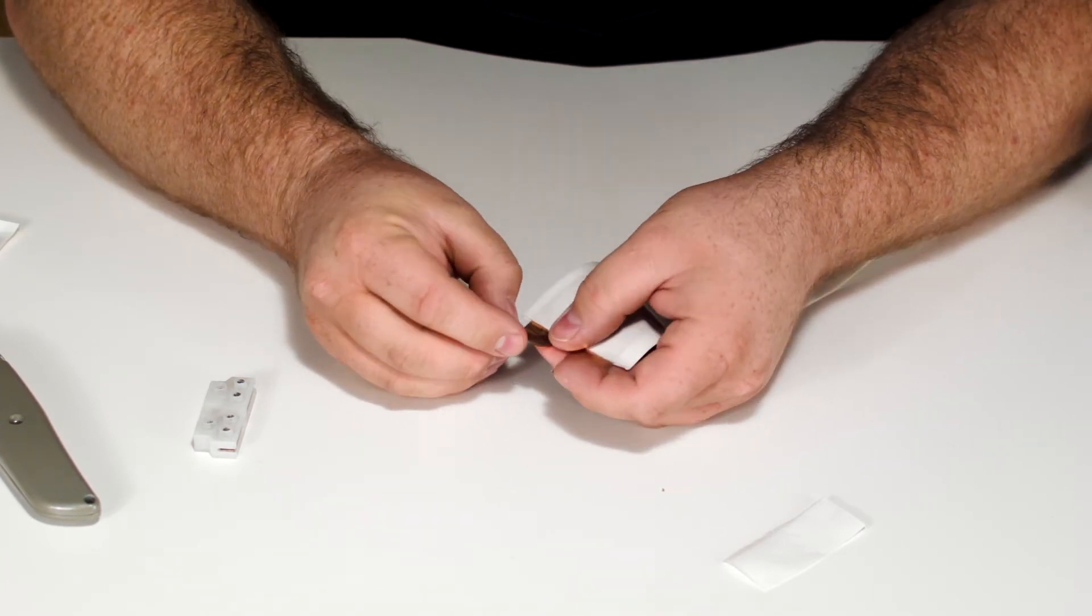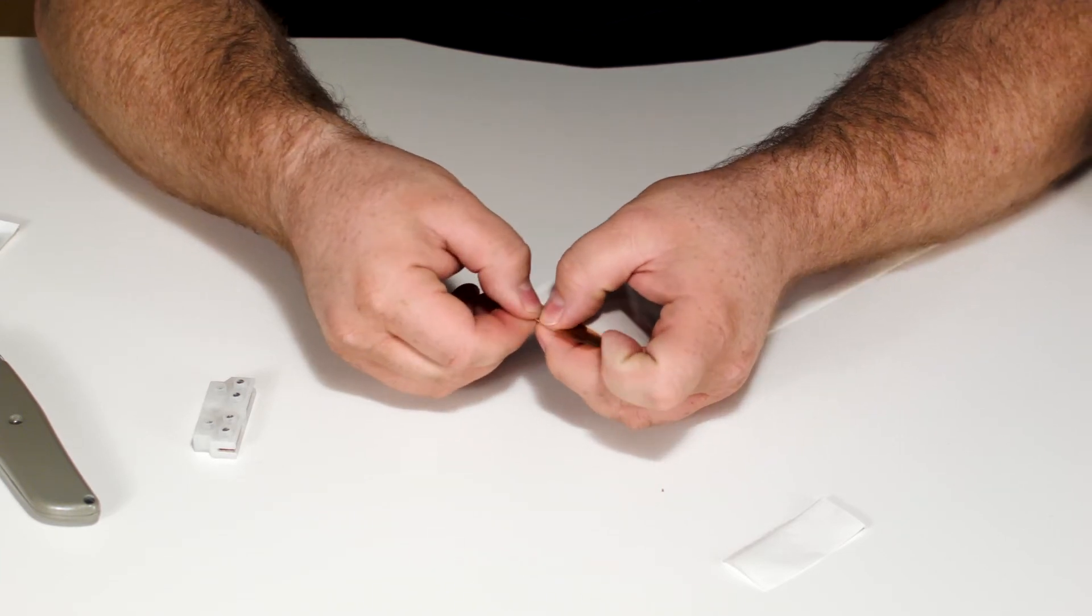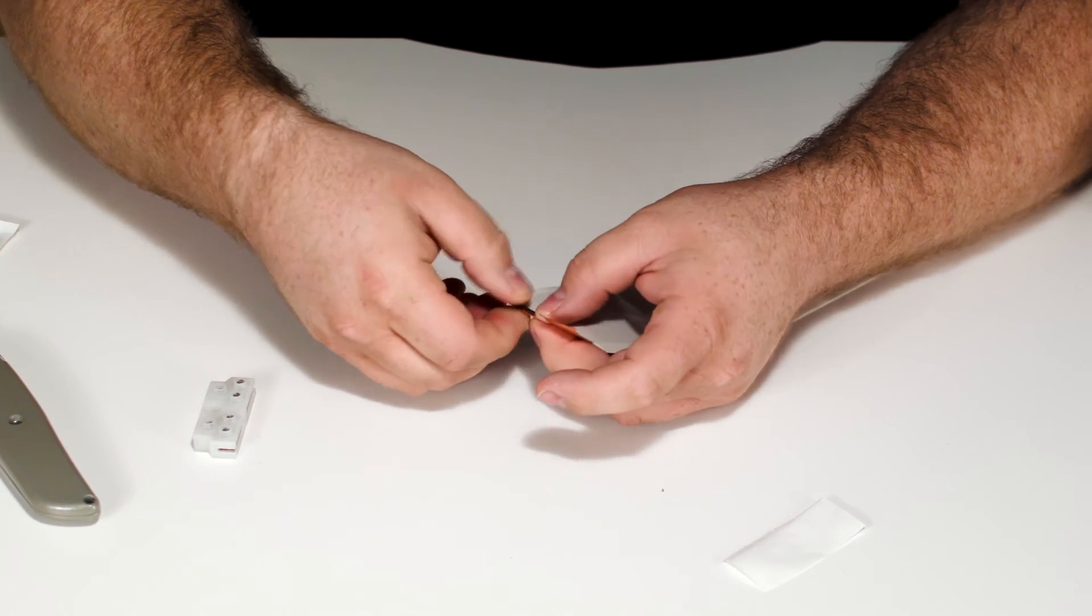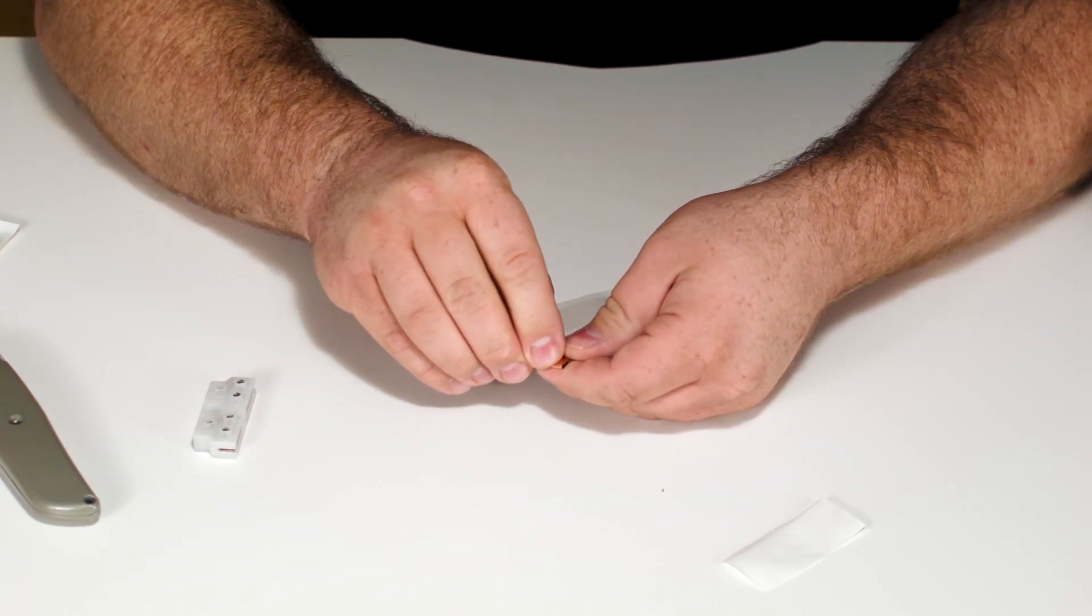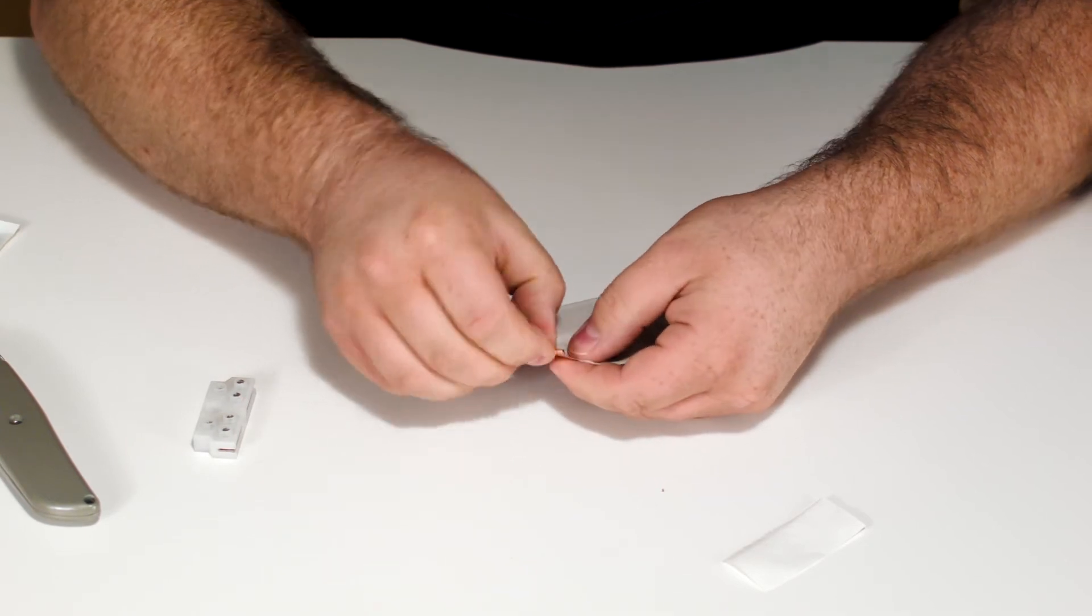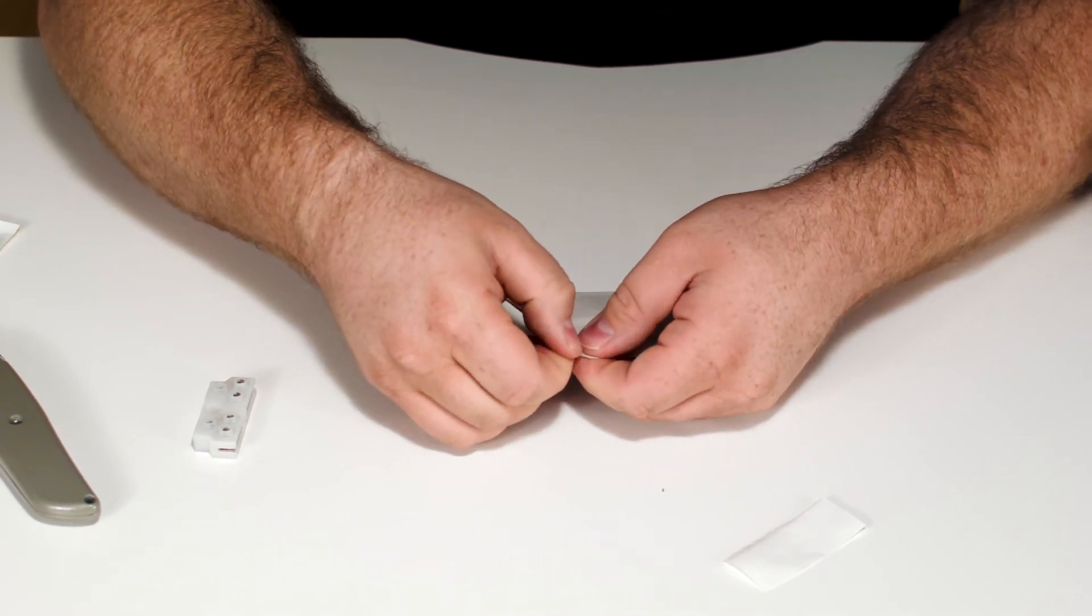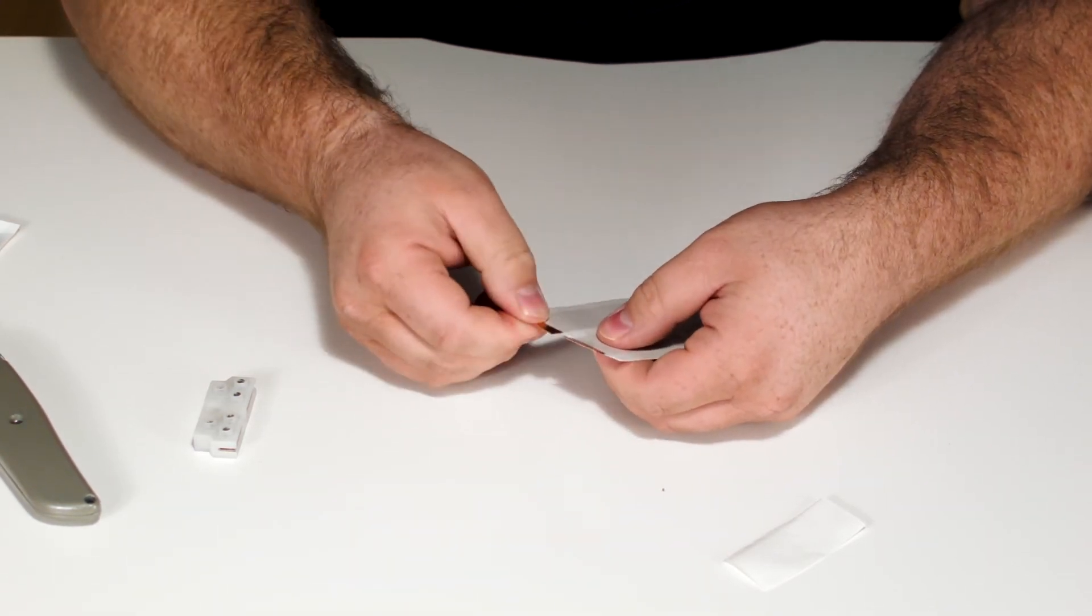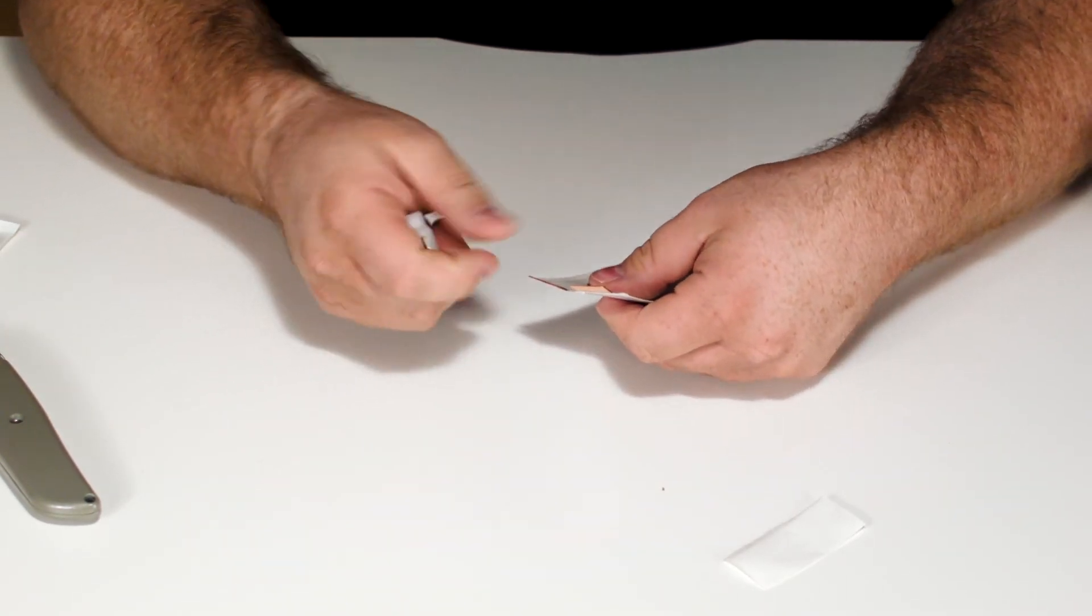The first fold will fold over about a quarter of an inch, and then we'll fold that over again. We'll do the same thing here. So we've got this exposed connector that has no adhesive on it. Go ahead and pinch those to compress that down, and that will fit right into the terminal block.